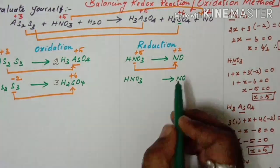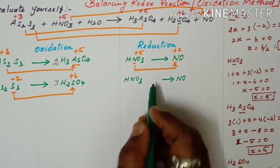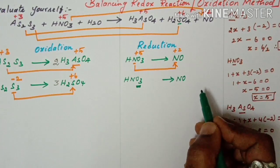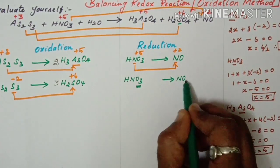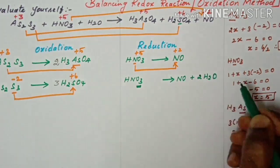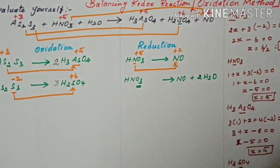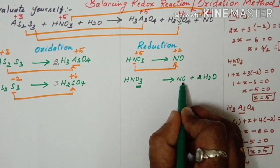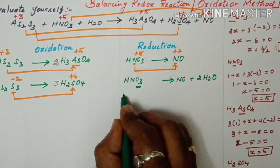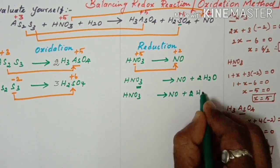For the reduction half-reaction, HNO3 gives NO. We need to balance oxygen atoms by adding water molecules. There are 2 oxygen atoms to balance on the right side, so we add 2H2O: HNO3 gives NO plus 2H2O.